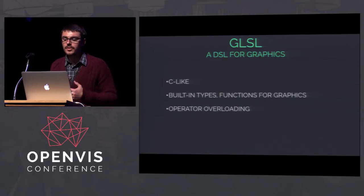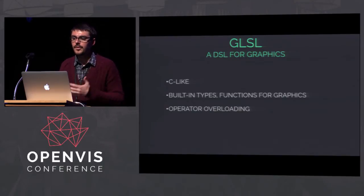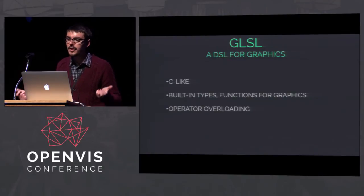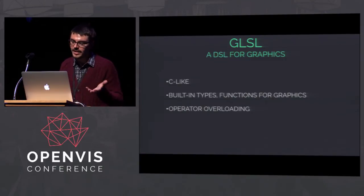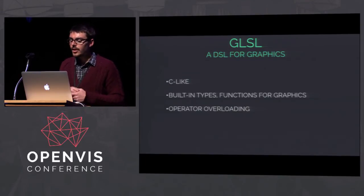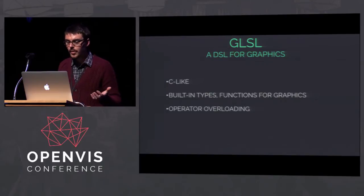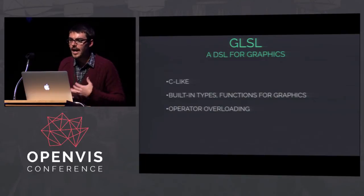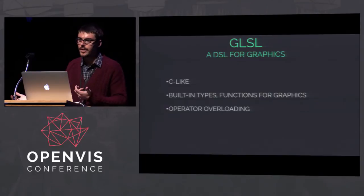Let's talk about GLSL — the GL Shading Language, a domain-specific language for graphics. It looks like C if you've ever seen C. It has built-in types for vectors and matrices, and a lot of built-in functions — not only math functions but graphics-specific ones like reflect and refract. The feature I love most is operator overloading: you can do operations between different types and it works as expected — add two vectors with a plus sign, add two matrices with the same sign.